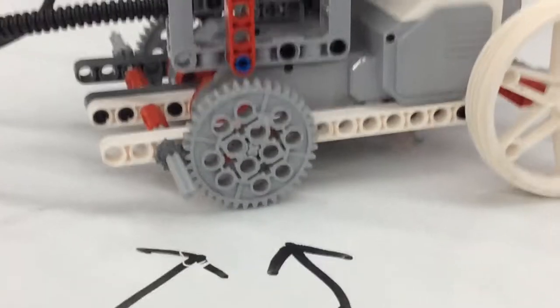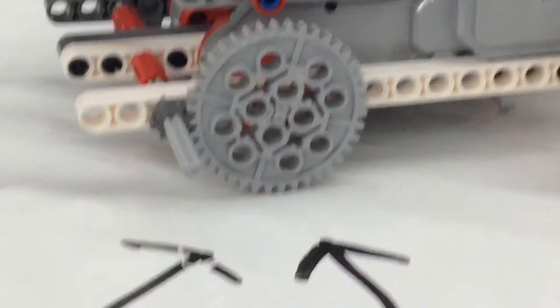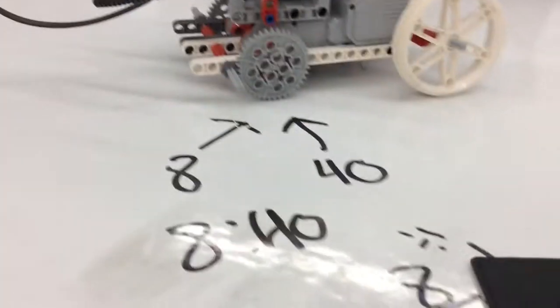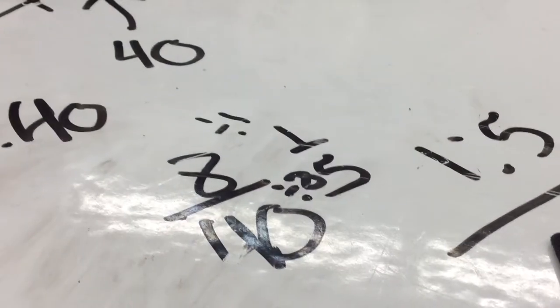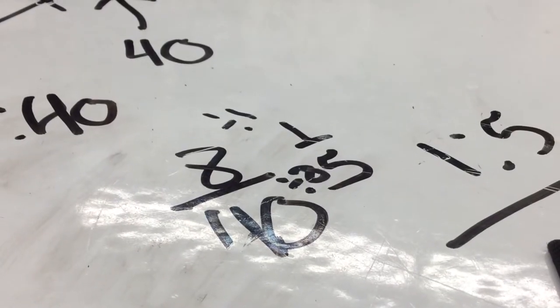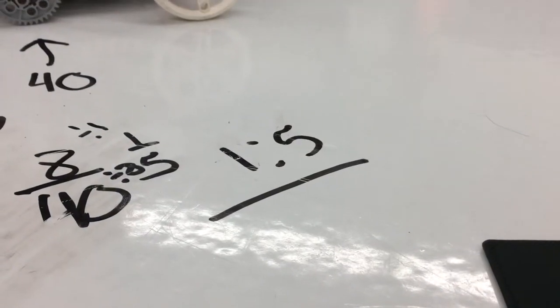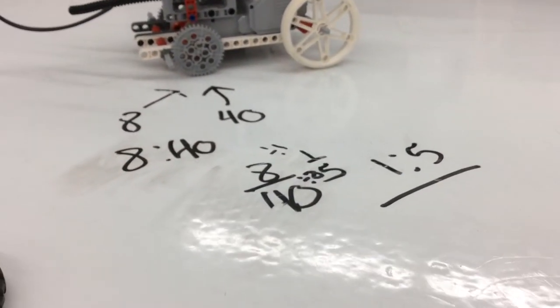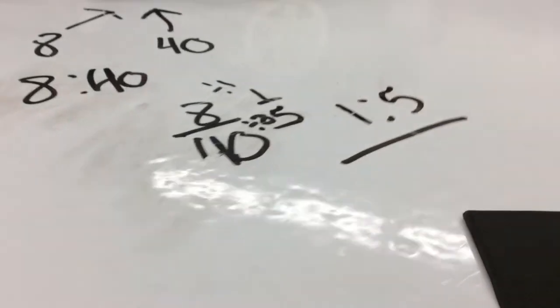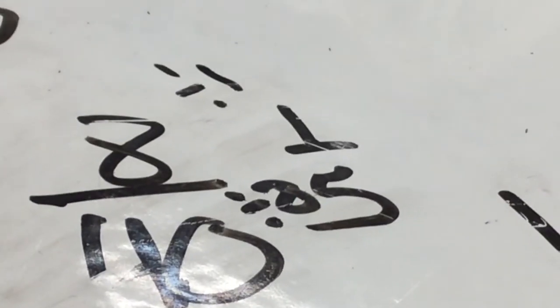As you can see here, that one on the right is 40 teeth and the left one is 8 teeth. So that would be an 8 to 40 ratio. 8 divided by 8 is 1, and 40 divided by 8 is 5. So that would be 1 to 5.